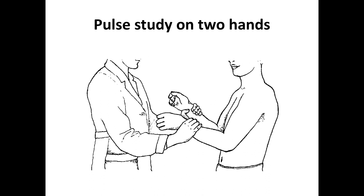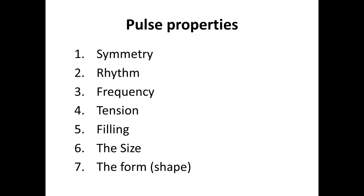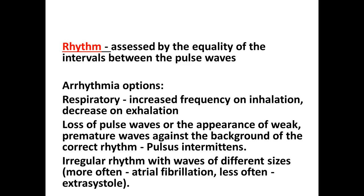Pulse study starts from preparation of both hands. You should assess pulse properties in the radial artery: symmetry, rhythm, frequency, tension, filling, size, and form or shape of the pulse. Rhythm is assessed by the equality of intervals between pulse phases. Sometimes there may be arrhythmias — for example, respiratory arrhythmia, where frequency increases on inhalation and decreases on exhalation.